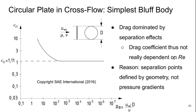Let's first consider the very simplest Bluff Body, which would be a circular plate in a cross flow. So it's basically a thin circular plate that is normal to the incoming flow. Here, the drag is dominated by the effects of flow separation. And the drag coefficient is thus not really dependent on Reynolds number, except for very low values of Reynolds number.